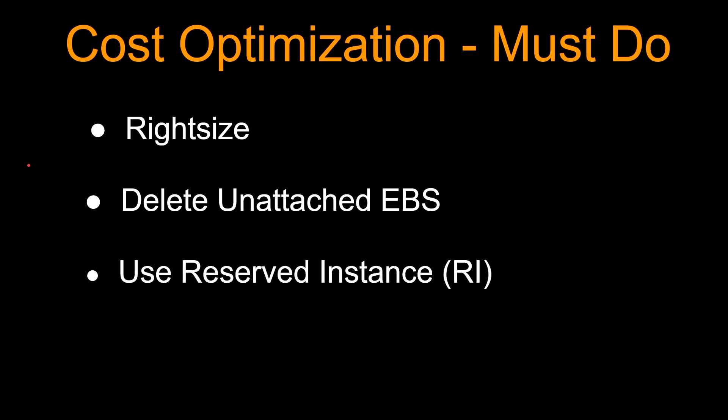Next must-do tip is use reserved instances, or RIs. RIs provide a significant discount — up to 75% compared to on-demand pricing — and provide a capacity reservation when used in a specific availability zone. And you have the flexibility to change families and OS types when you use convertible RIs.